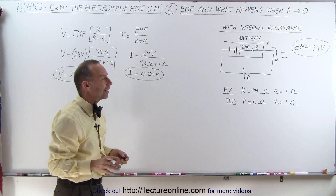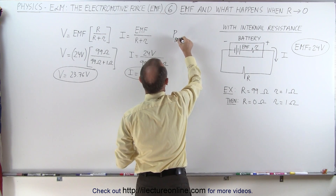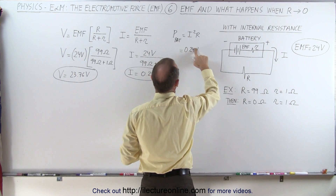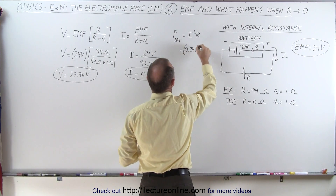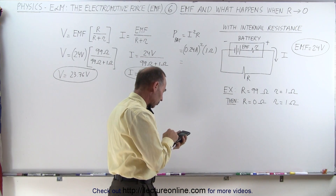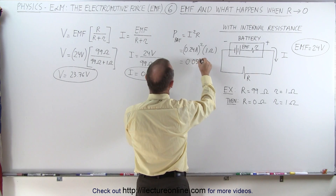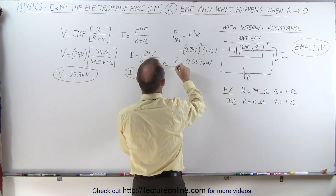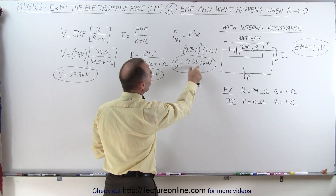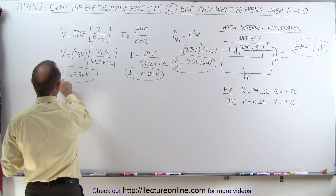Just to show you the difference, let's calculate the power dissipated by the battery. The power of the battery is equal to I squared times R. In this case, that would be 0.24 amps squared times the resistance of 1 ohm, so the power dissipated would be 0.0576 watts. That's a very small power dissipation. You'll notice that when a battery is operated under normal circumstances, it will become somewhat warm because the internal resistance will dissipate some of the energy, but not a lot.